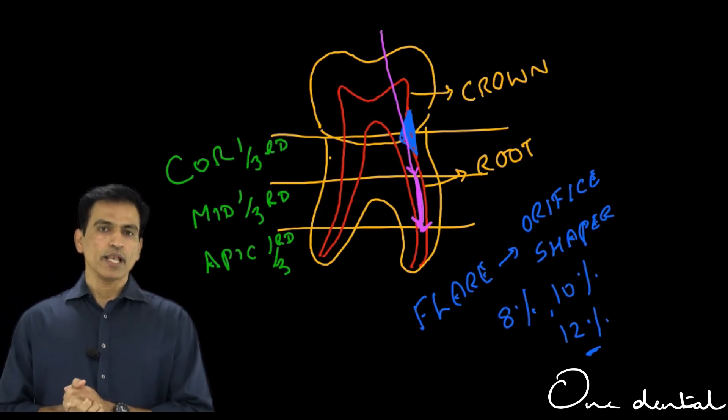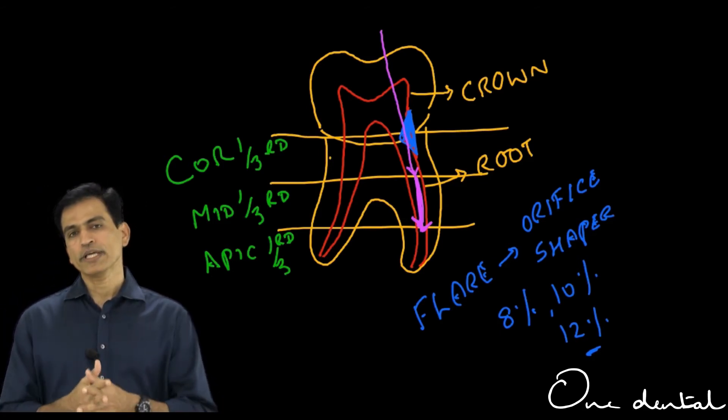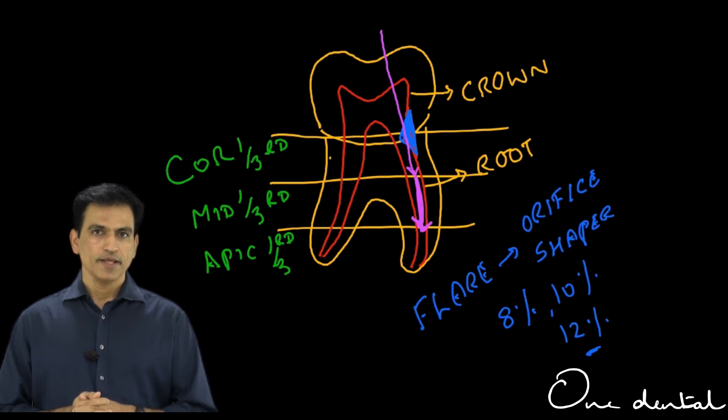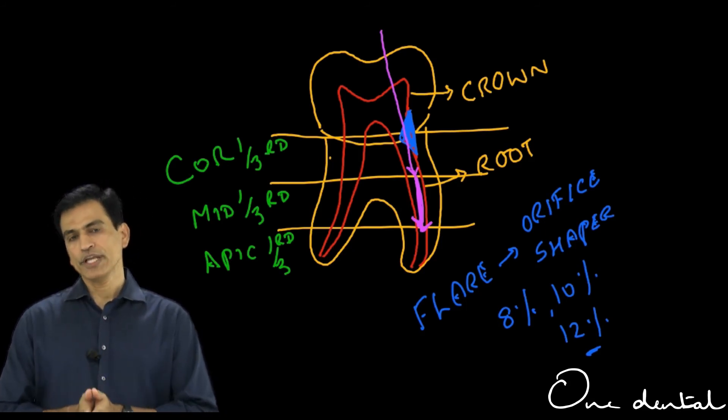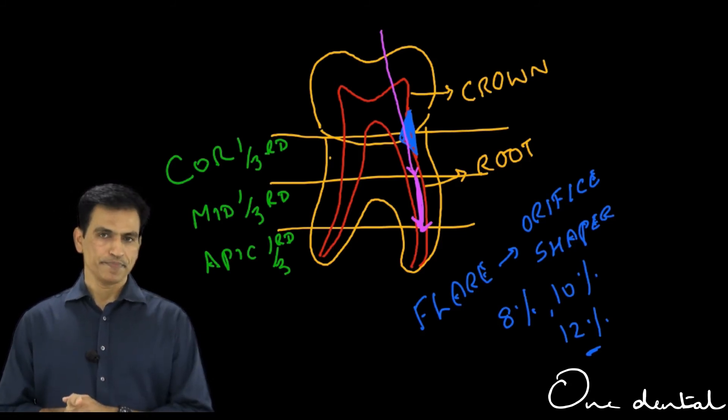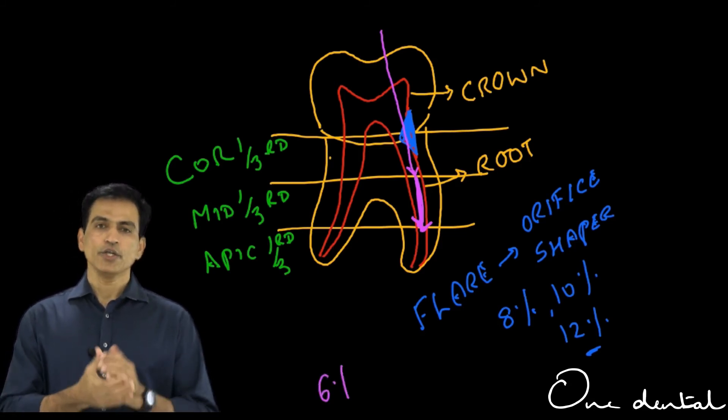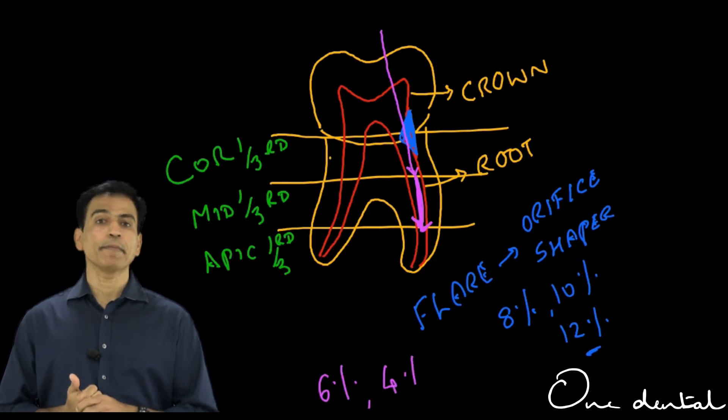Try and negotiate the canal well or up to where you have gone, you know the canal is patent. Try to use a lesser tapered file and approach up to where you have reached by opening it up. By doing this, you can easily negotiate the middle third and prepare the middle third.